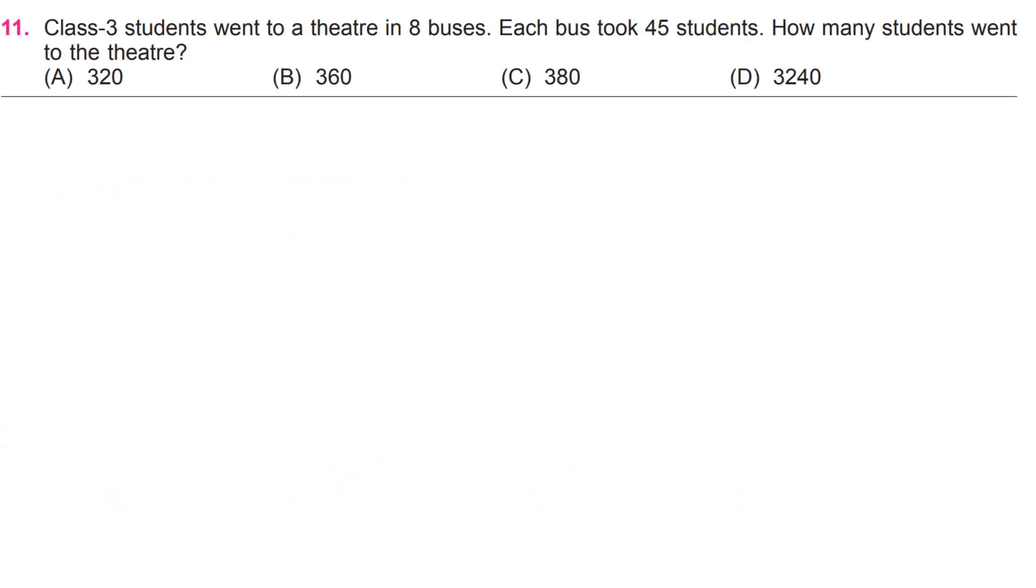Class 3 students went to a theater in eight buses. Each bus took 45 students. How many students went to the theater? B, 360.